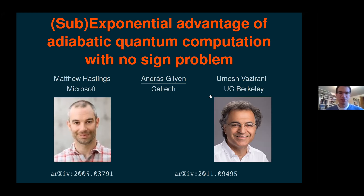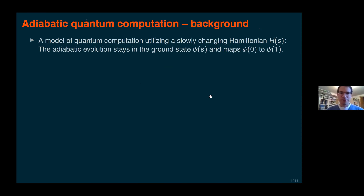Matt showed how to achieve a super-polynomial advantage by adiabatic computation without a sign problem, and then with Umesh we extended some of his ideas and improved the result. So let me first briefly go over what the main ideas behind adiabatic quantum computation are. This is a model of quantum computation which utilizes a slowly changing Hamiltonian H(s), where s is a parameter which changes from zero to one.